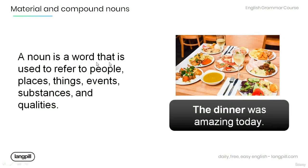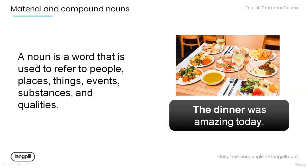Remember that a noun is a word that is used to refer to people, places, things, events, substances, and qualities. Now have a look at the example over here: 'The dinner was amazing today.' In this sentence, the dinner is a noun and it is used to refer to a thing.